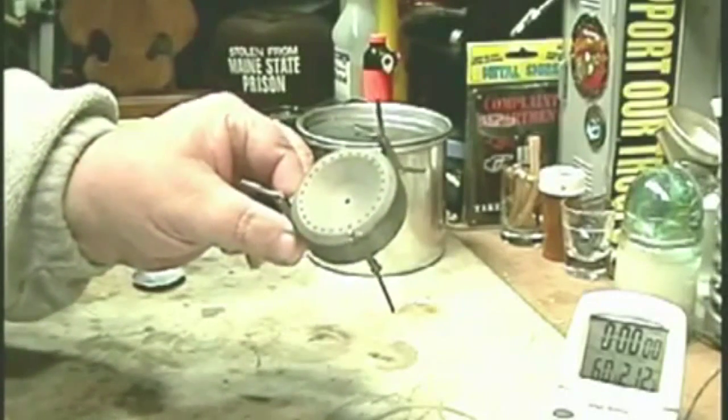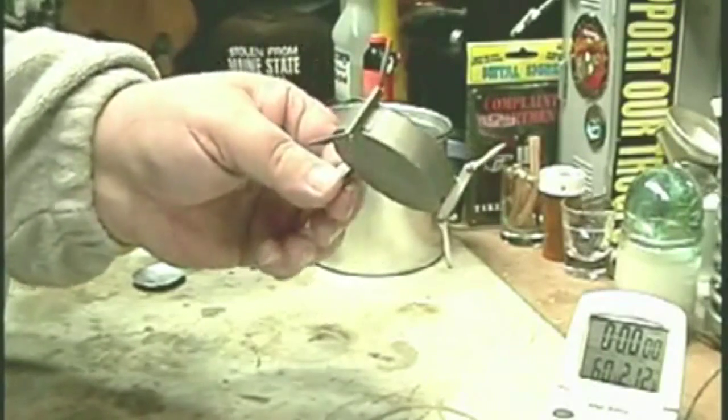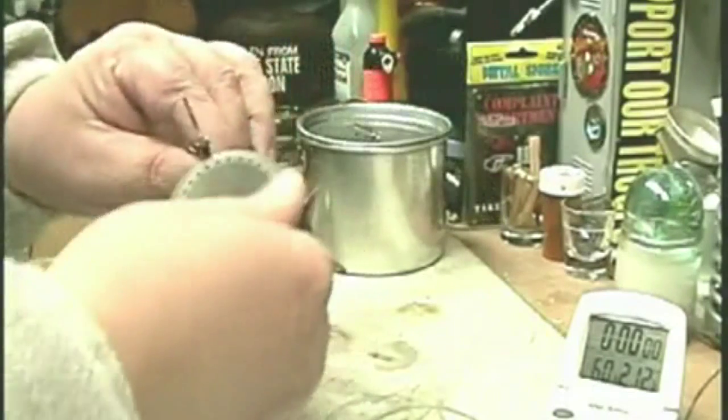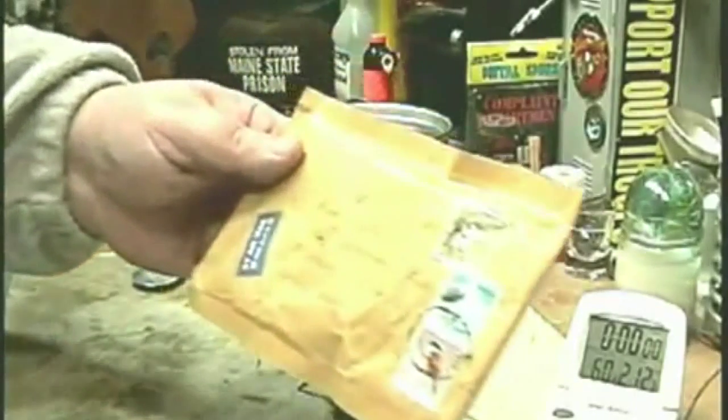I bought this Vargo Triad titanium stove, at least I think it is. All it came with was just this in a brown envelope, brown paper envelope from Hong Kong.